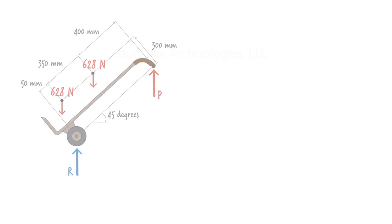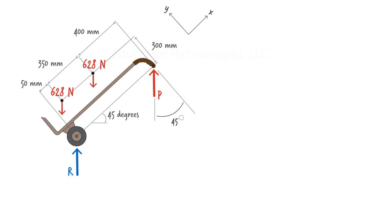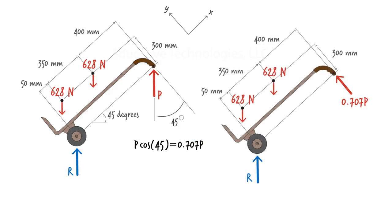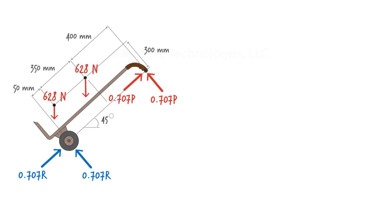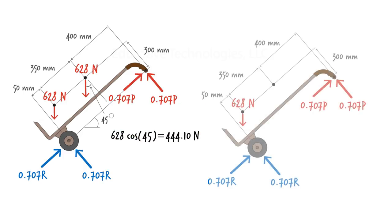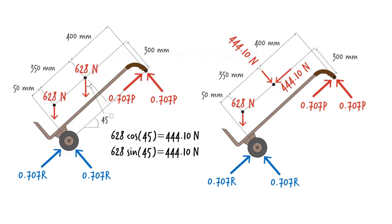Since we have the key distances specified along the inclined plane, let's define our coordinate system along that plane as well. We can rewrite each force in terms of its x and y components. P makes a 45-degree angle with the y-axis, so P times cosine of 45 gives the y component, and P times sine of 45 gives the x component. We replace R with its x and y components in a similar manner. Note that the two 628 newton forces each make a 45-degree angle with the y-axis, so we can easily determine their x and y components. Replacing all forces with their components, we end up with this free body diagram.